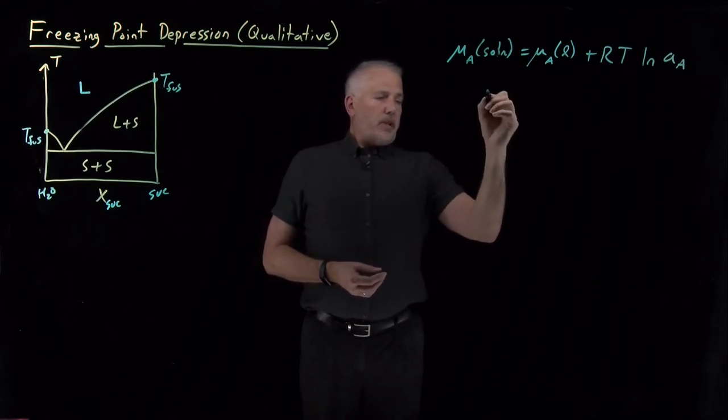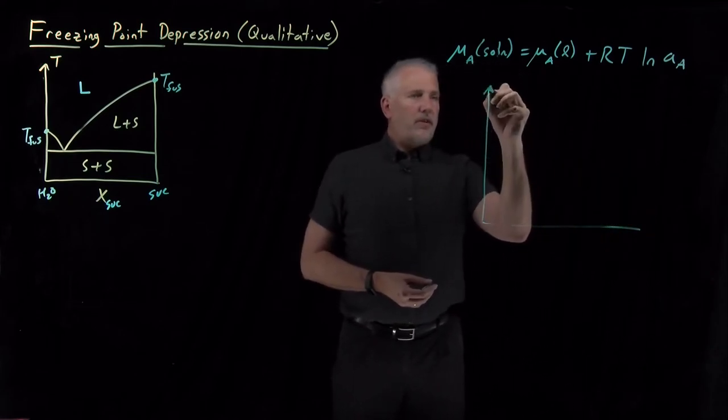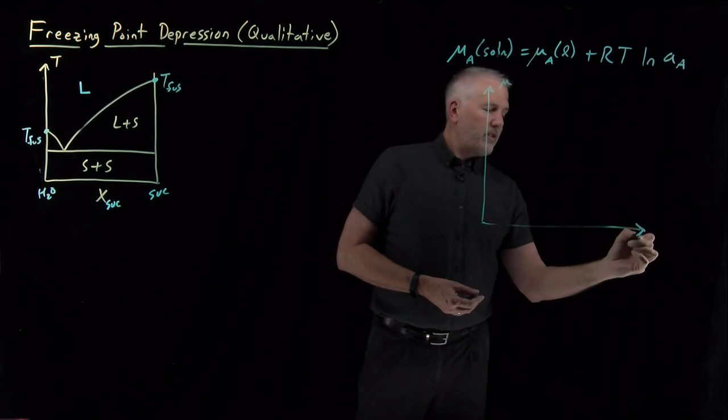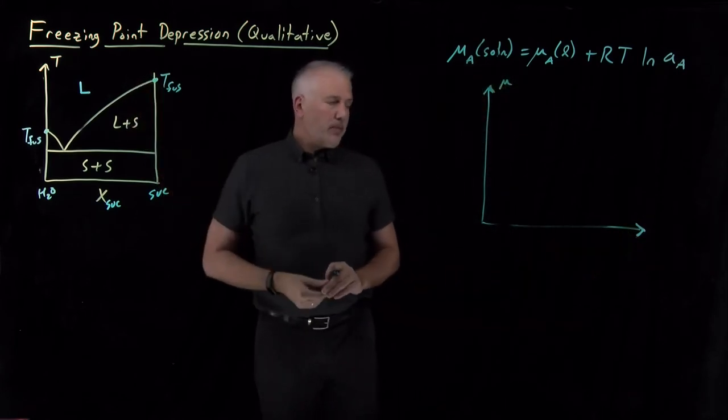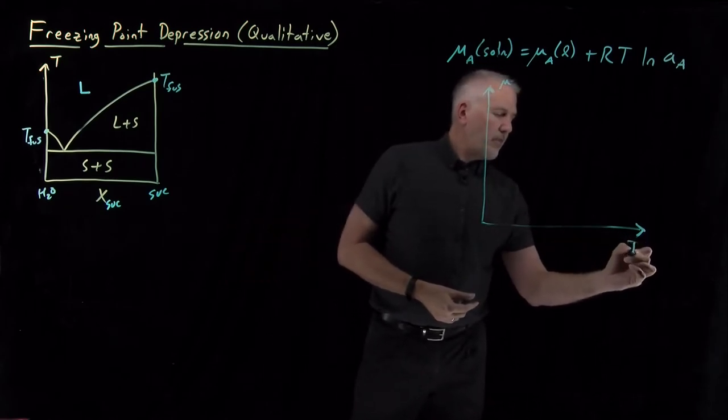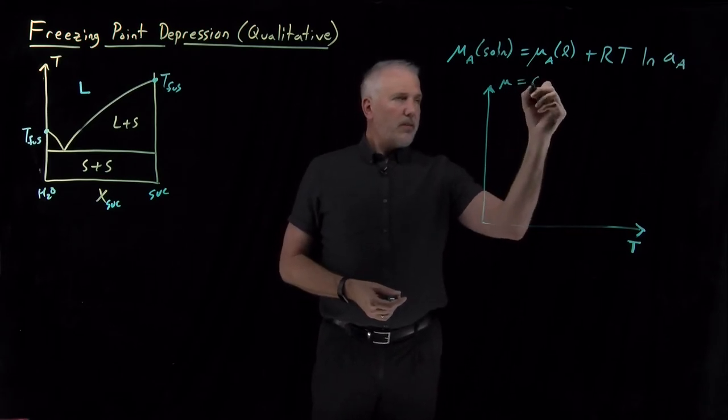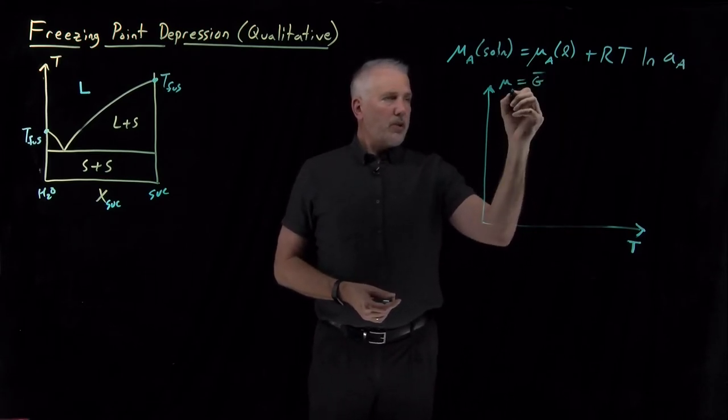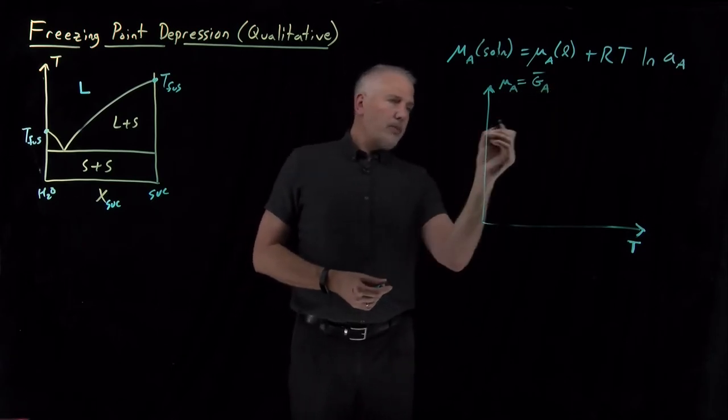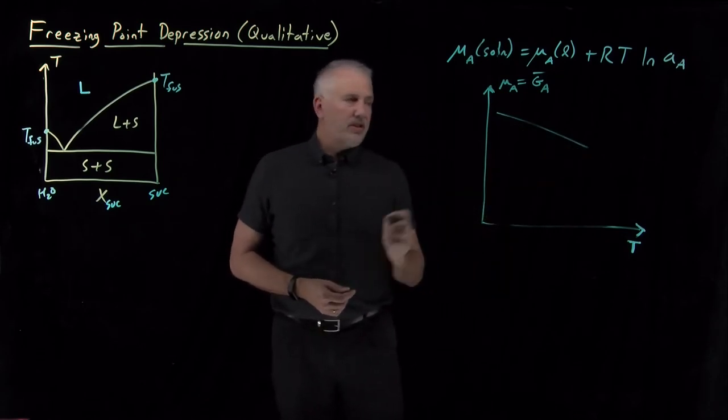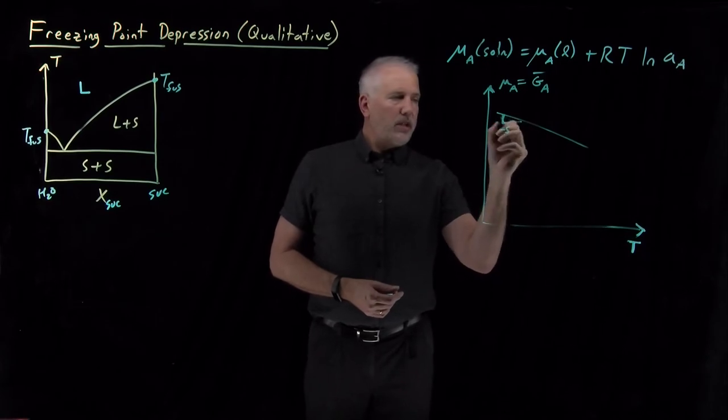Let me sketch what that looks like as a graph. If I plot the chemical potential as a function of temperature, since we want to talk about solidifying or melting a substance as I change the temperature. Remember that the chemical potential, which is the same thing as the molar free energy, drops as the temperature increases proportionally to the entropy.